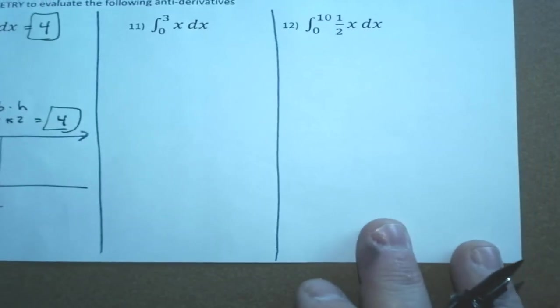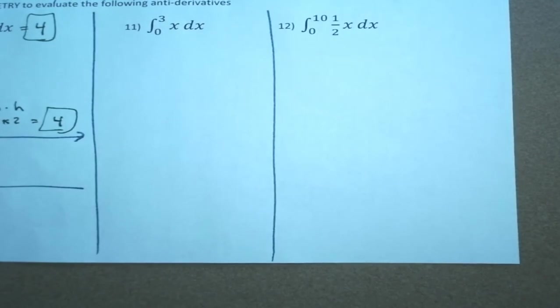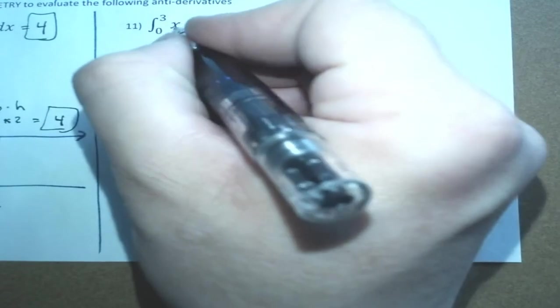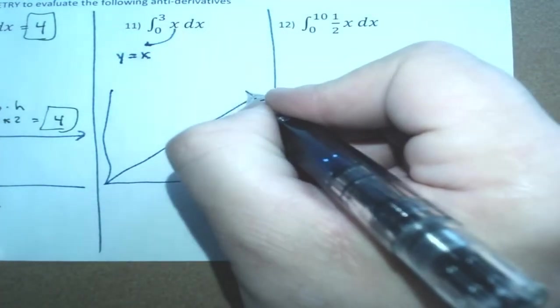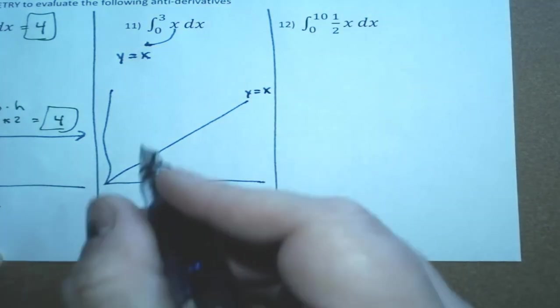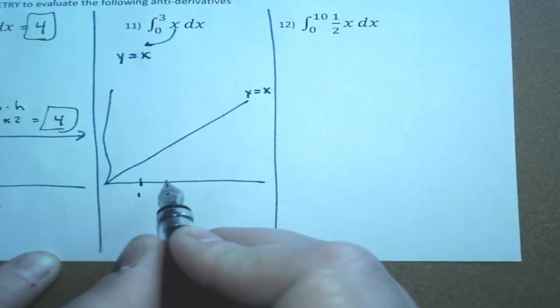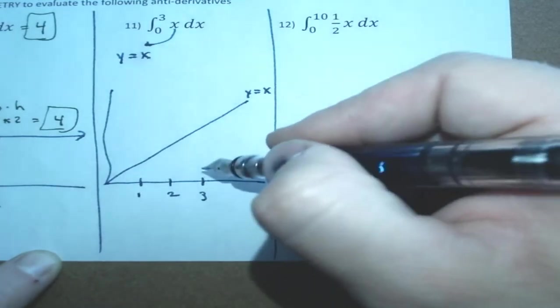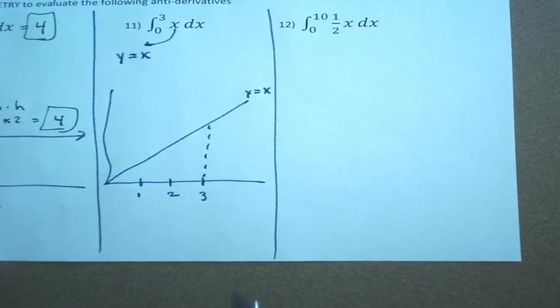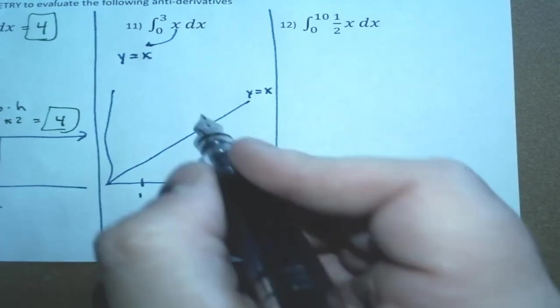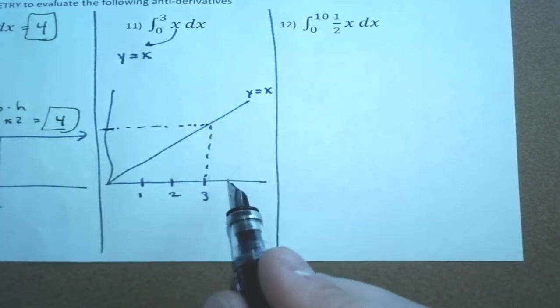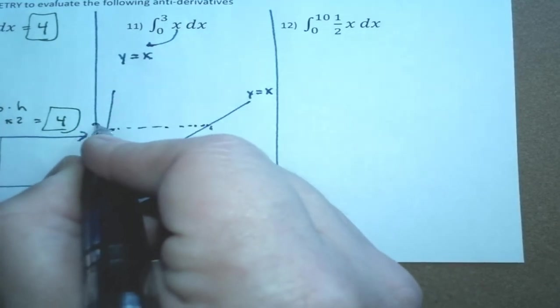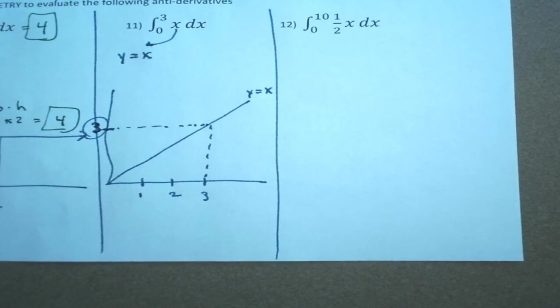How about this one? Let's try this one. This function is y equals x. y equals x is called the identity line. Makes a 45 degree angle. And we're going from where? 0 to 3. So 1, 2, 3. Now, what shape does that make? If we go to x equals 3, it makes a triangle. Well, I need to know this height. Lucky me, y equals x. So if x is 3, y is also 3.